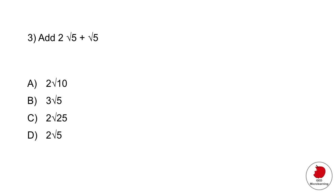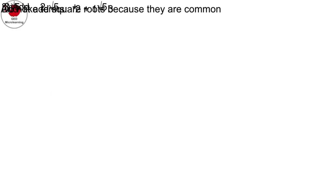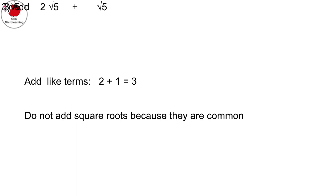Question three looks at adding two numbers with a square root. It asks you to add 2 times the square root of 5 plus the square root of 5. Remember that on the right side, where you just have the square root of 5, there's actually a 1 in front of that square root. All you have to do is add those like terms: 2 plus 1 gives you 3. You don't add the square roots because they are common terms — so you end up with 3 times the square root of 5, which is option B.